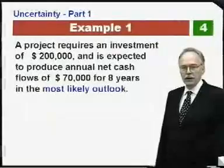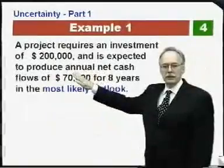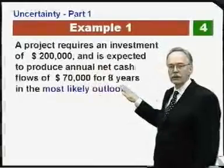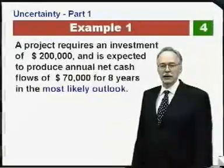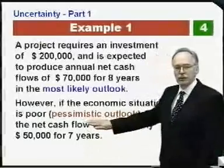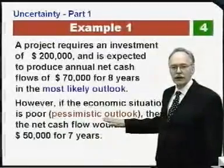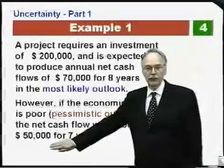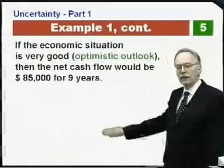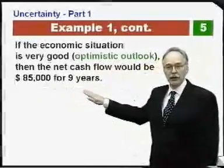Let's proceed into our example. Say we have a project with an investment of $200,000 and an annual net cash inflow of $70,000 for eight years — we'll call this the most likely scenario. If the economic situation is poor, we'd have a pessimistic outlook: lifetime drops to seven years and annual inflow is only $50,000. With a very good economy, an optimistic outlook gives $85,000 per year for nine years.